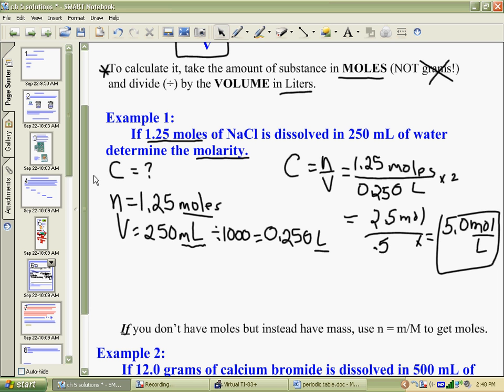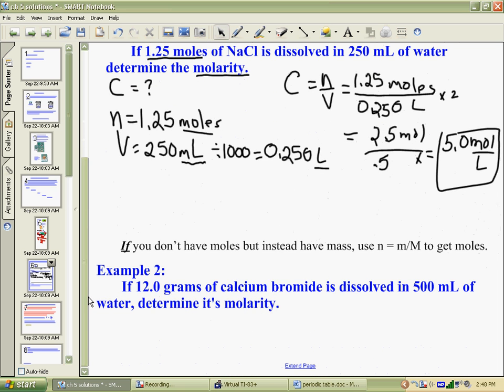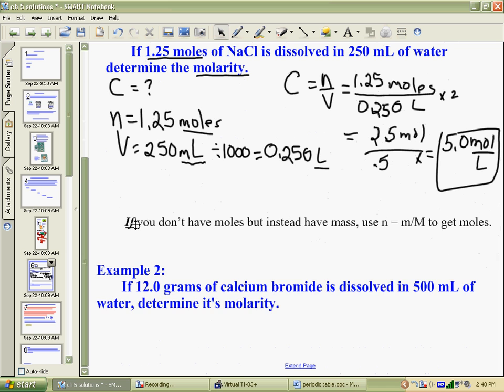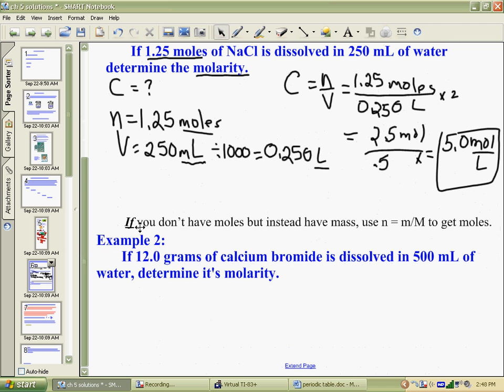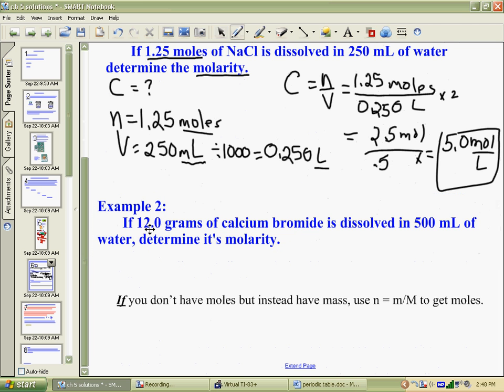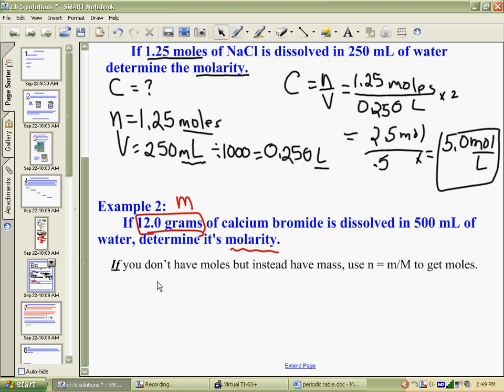So, you now could have a different type of example, where if you had 12 grams of calcium bromide, and you dissolve it in 500 mL of water, determine the molarity. Here, they were not very nice because they gave you a mass of solute and not the number of moles. So, we have this little trick here that if you do not have moles, but instead have mass, you can use this formula to convert from moles to mass and vice versa.